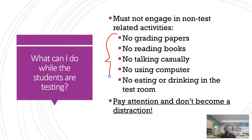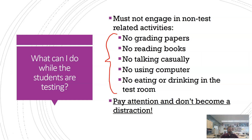During the test, there are things you cannot do. No grading papers or reading books. Conversations must not be casual — it needs to be quiet. Don't use a computer, and you can't eat or drink in the test room. If you need to step out, we'd like two people in the room at all times if possible. There are far fewer students in rooms this year than in past years. Just don't become a distraction and you'll be fine.